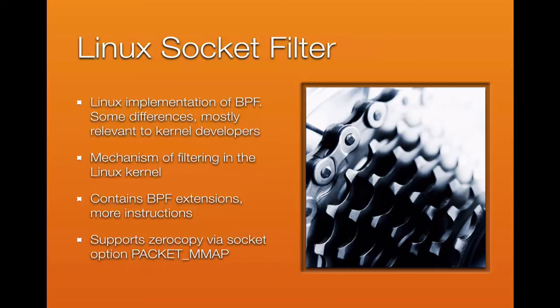On the Linux side, the kernel's implementation of BPF is called the Linux Socket Filter. There is documentation about this in the filter.txt file in the kernel's documentation tree. One key difference is that Linux includes a number of BPF extensions — additional instructions added by Linux NetDev developers that aren't always supported in other operating systems.